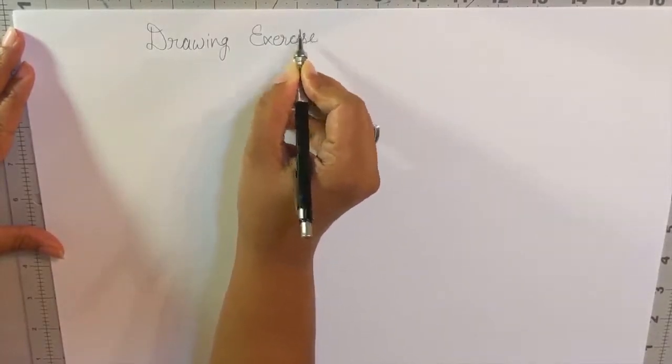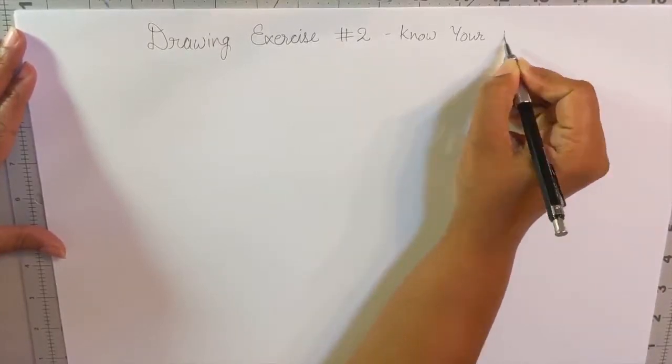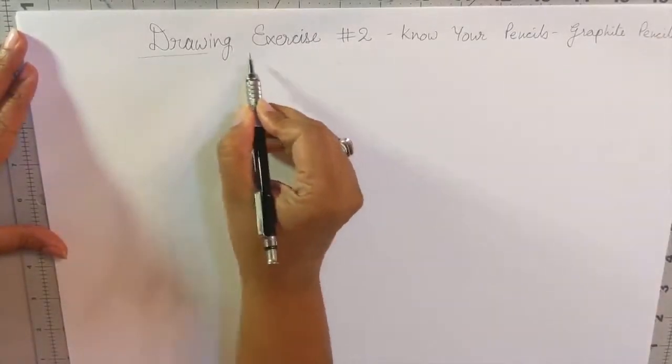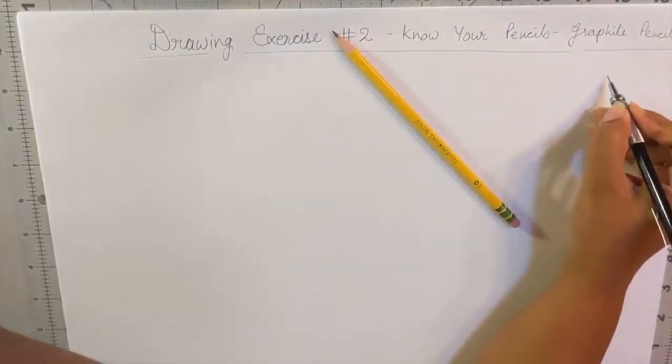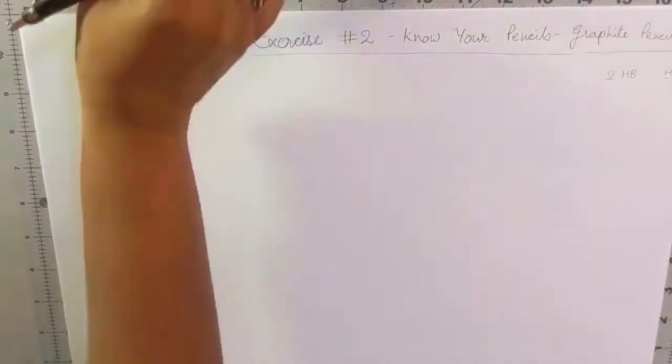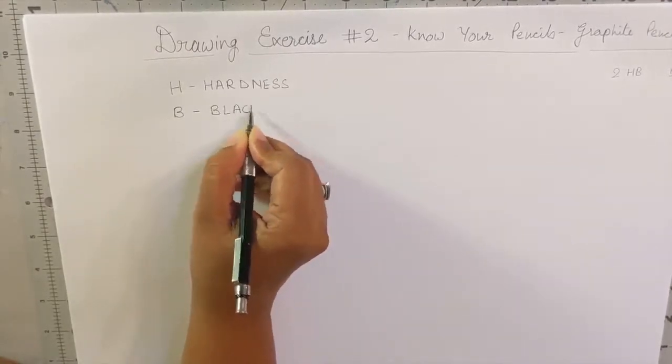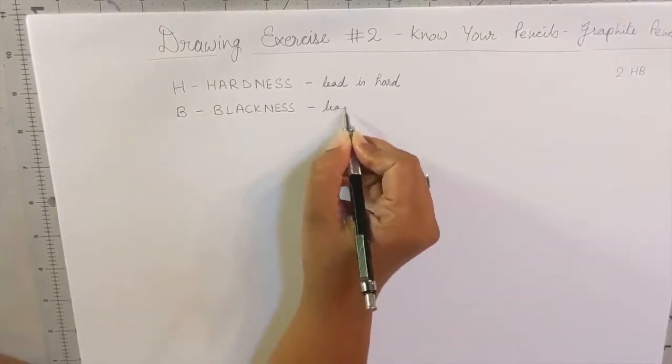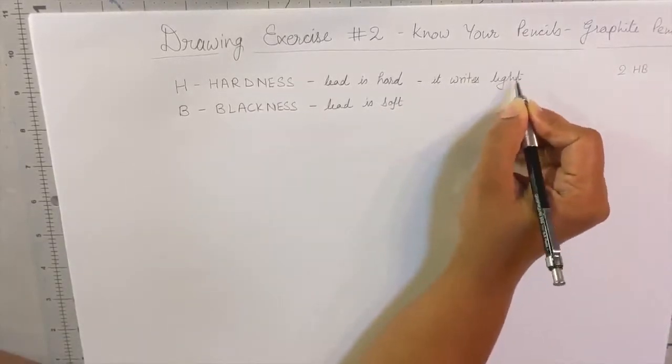This is our drawing exercise to know your pencils, in which we will discuss the graphite pencil. Whenever you are doing any graphite artwork, there are various pencils available in the market—lots of brands and lots of numbers. Here we are discussing the numbers on the pencil. As you see here, it's 2HB pencil. Every kid in school uses 2HB pencil. So what is this H and B? H is for hardness and B is for blackness. In 2HB it's a combination of both. In H pencil the lead is very hard, and in B the lead is soft. H pencil writes light and B pencil writes pretty dark.